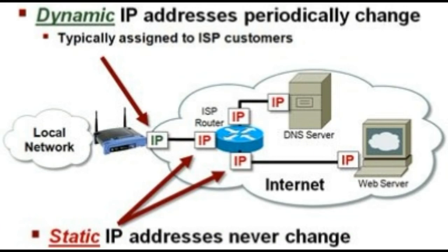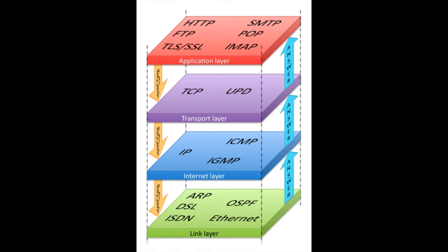A dynamic IP is an address which changes over a specified period of time. In a local network this is assigned by the DHCP server, and on a public network it is provided by the ISP. If you are thinking that you carried out a hack attack with a previous IP and will not get caught, then you are wrong. Your ISP keeps track of all dynamic IPs assigned to your device and can easily determine when it was assigned. Dynamic IPs are more flexible and easy to implement.